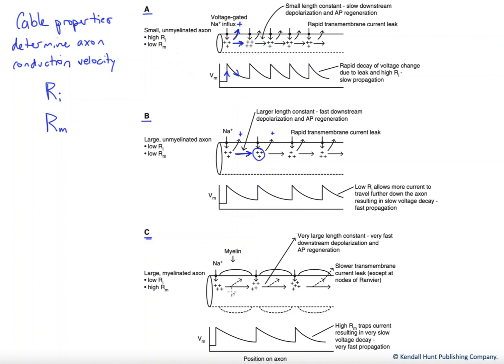Well, let's see what it does, though. Wrapping these multiple layers of membrane around the axon, what it does is it increases the electrical resistance across the membrane.